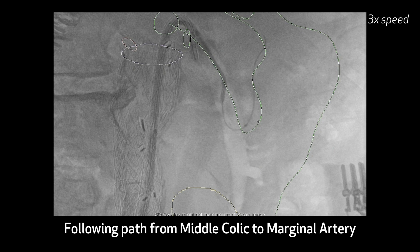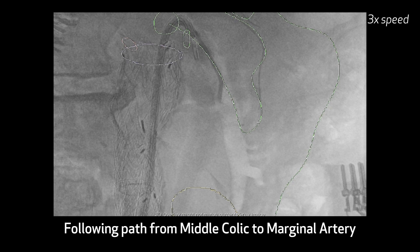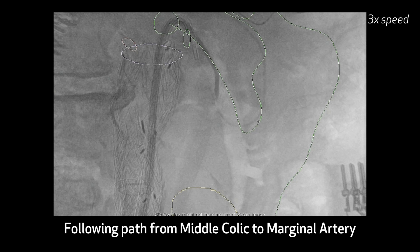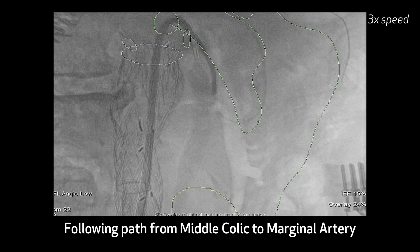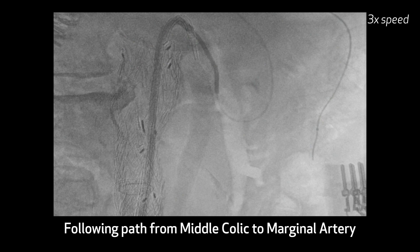Once we've done that, we will engage the middle colic artery with the Berenstein, and then using the combination of a microcatheter and an 0.014 wire, we'll navigate along the marginal artery of Drummond towards the origin of the inferior mesenteric artery. You can see that the path which was outlined off the CT scan — there's some deformity when you put catheters inside it, but it's remarkably accurate.